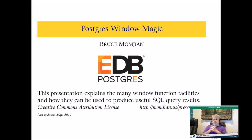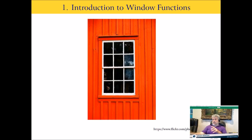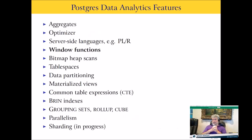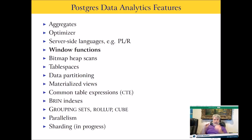Window functions are part of a larger set of features that Postgres provides for data analytics. This includes standard aggregates like sum, count, and standard deviation; the optimizer; server-side languages like PLR; window functions; bitmap scans; table spaces; data partitioning; materialized views; common table expressions; BRIN indexes; and grouping sets. Window functions are just one level within this broader analytics capability.